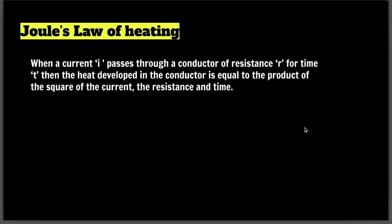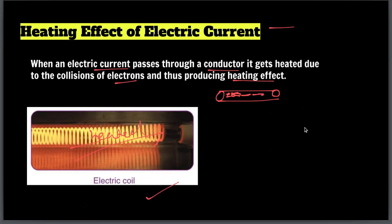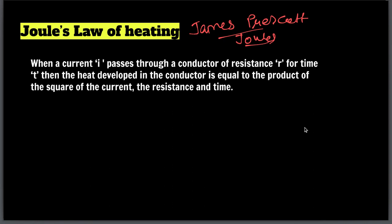The scientist responsible for this is James Prescott Joule — you have studied Joules before, like kilojoules in 9th grade for work. Joule stated that when a current I passes through a conductor of resistance R for a time t, the heat developed in the conductor is equal to the product of the square of the current, the resistance, and the time.